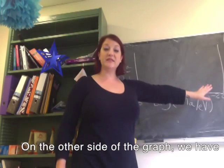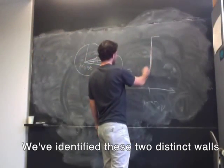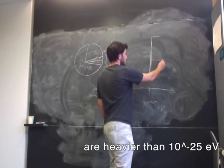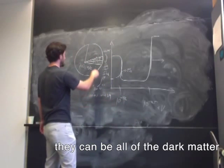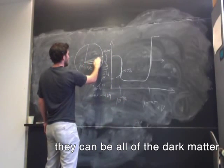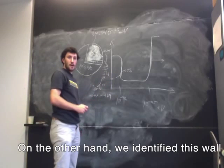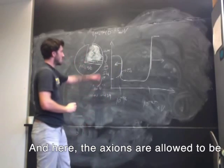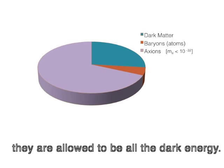On the other side of the graph, we have axions behaving like dark matter. We find these two distinct walls. What that means is, as long as axions are heavier than 10 to the minus 25 eV, they can be all of the dark matter. On the other hand, we identify a wall at 10 to the minus 32 eV, where the axions are allowed to be all of the dark energy — that is, for masses less than 10 to the minus 32 eV.